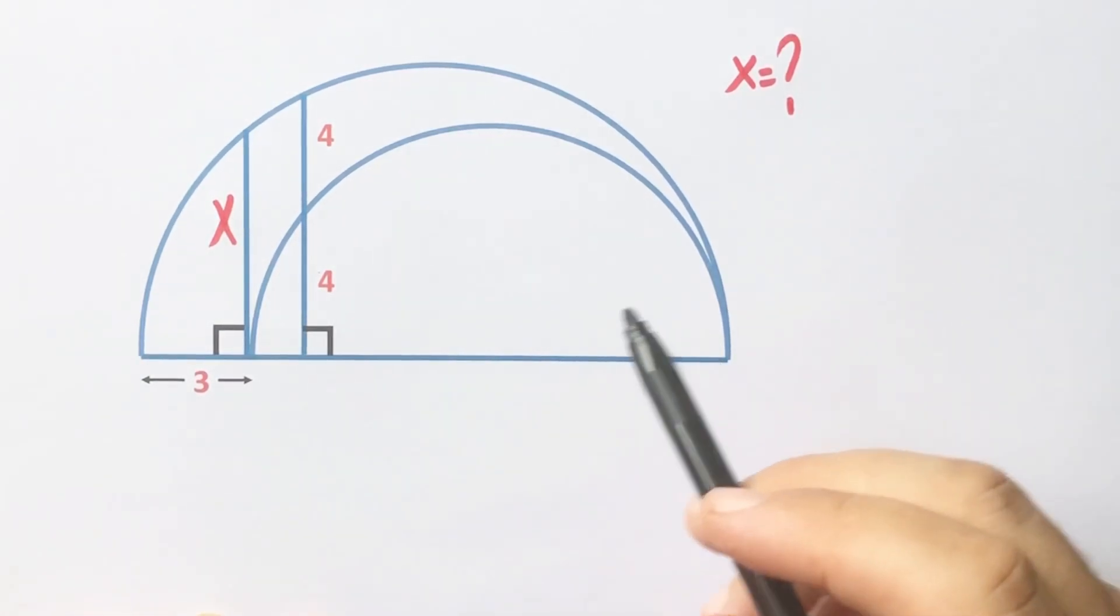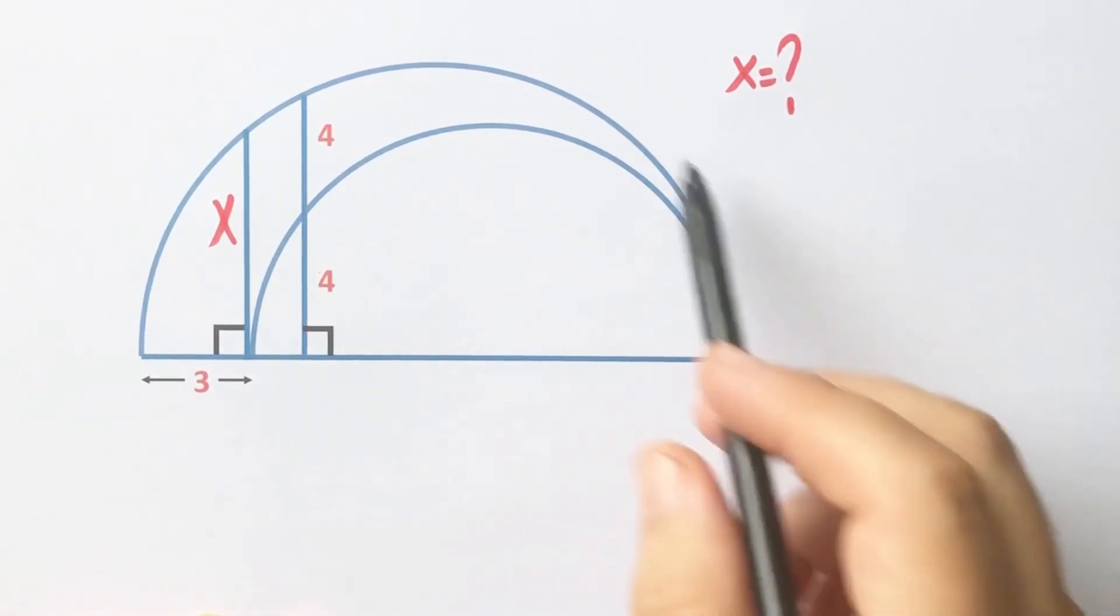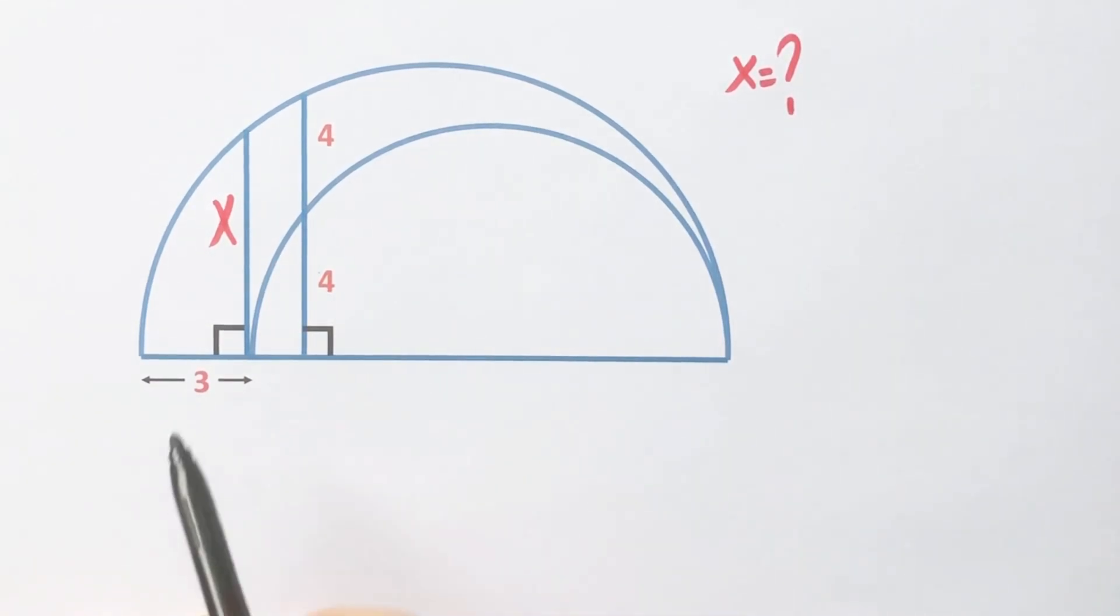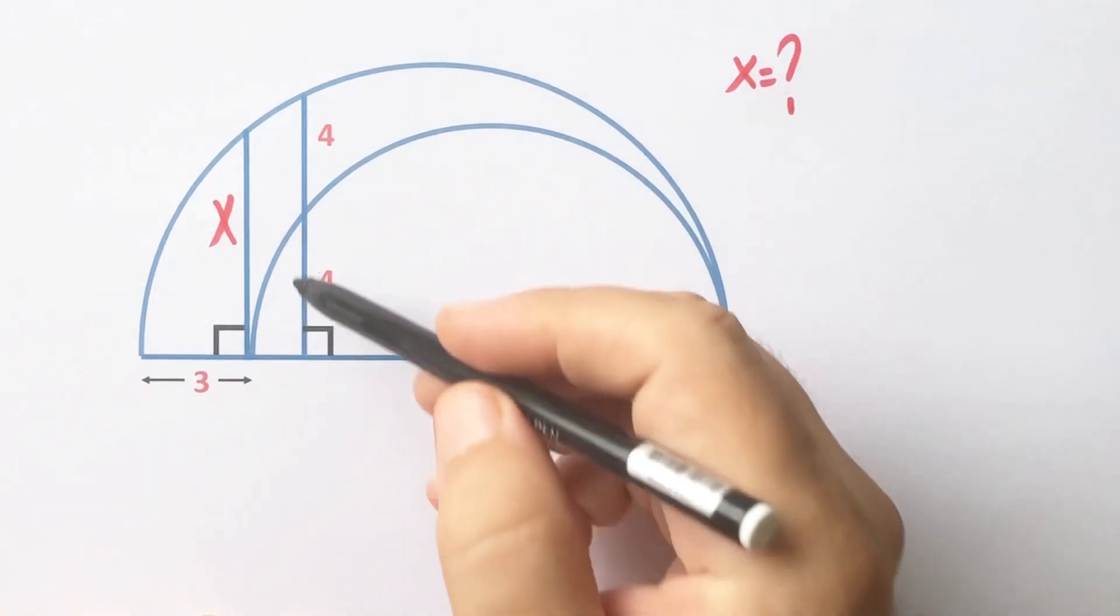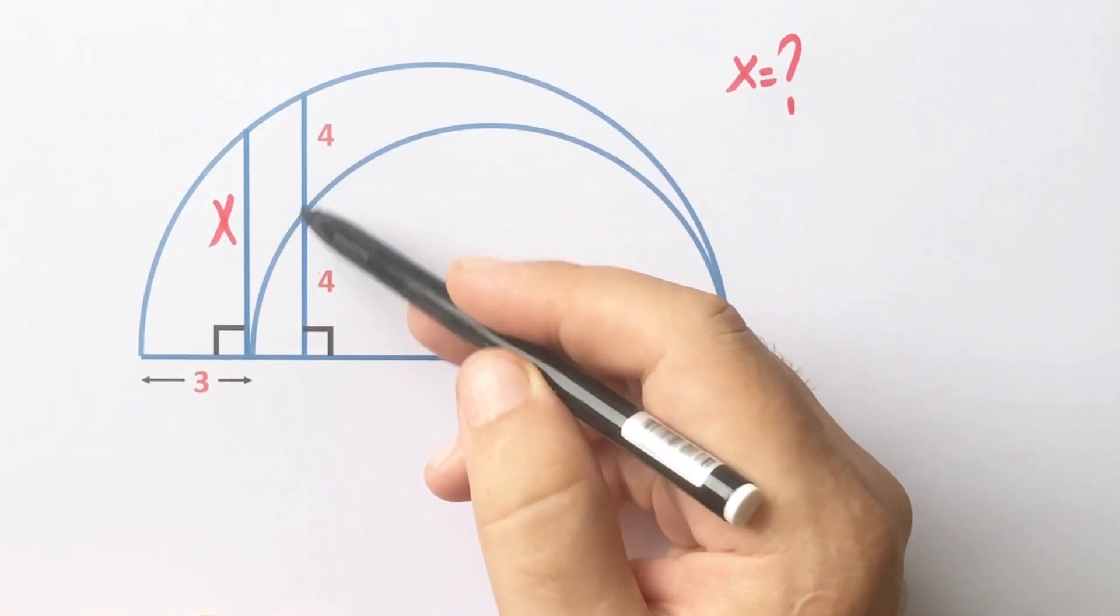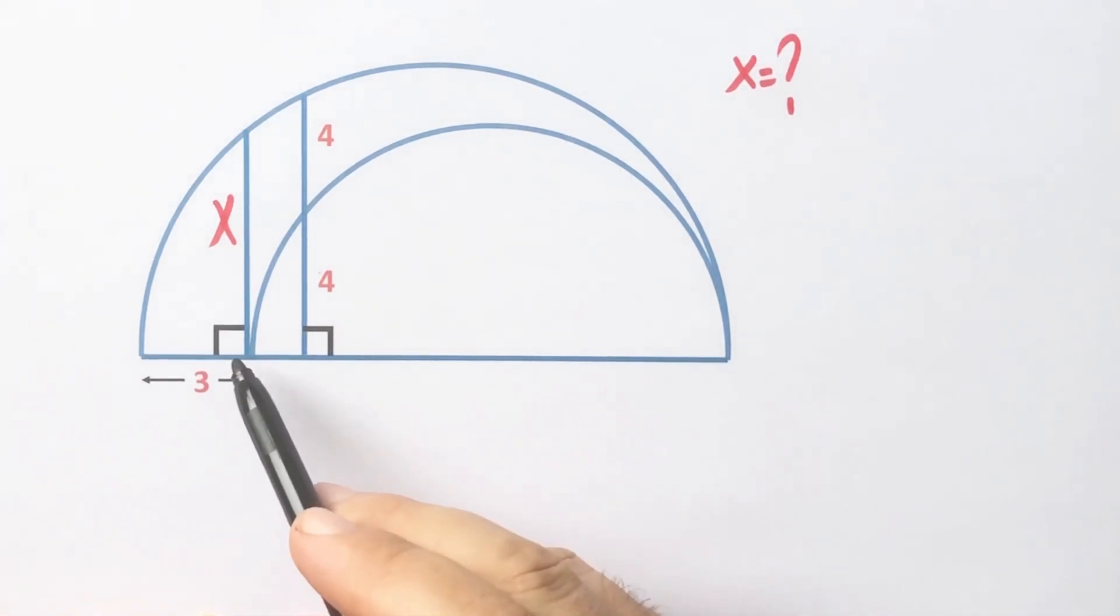Hello everyone, in this video we have two semi-circles that are internally tangent to each other. Here is three, these are four units, and x is asked.